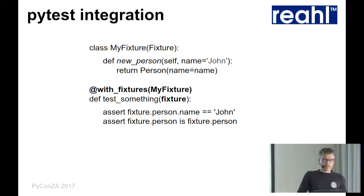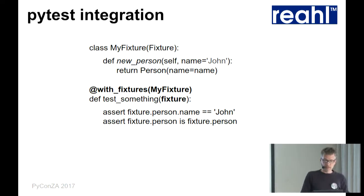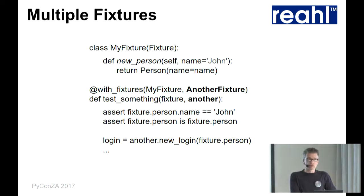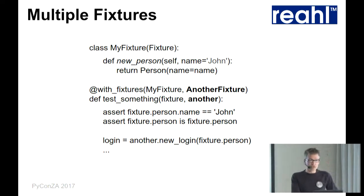All of this stuff existed last year. Since then we've integrated it with PyTest. We have a decorator called `with_fixtures`. If you decorate a function with that and put the class you want to use as a fixture, we will make sure that thing gets instantiated and passed into your test function. You can use more than one. The names of your arguments don't have any significance — the order does. It will send the instance of the first fixture into the first argument. You can also mix this with normal PyTest fixtures, as long as you add them at the end.